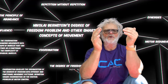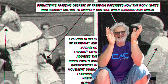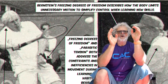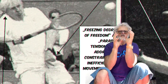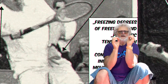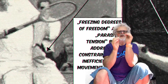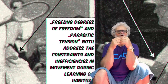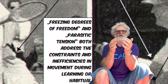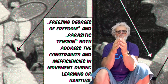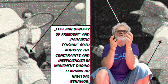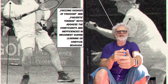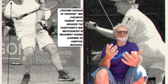In the book, I use these two tennis players as an example of how freezing degrees of freedom — by limiting the number of variables that need to be controlled — a learner simplifies the coordination problem. You don't have to be a master tennis coach to know if these two tennis players are competent or not.